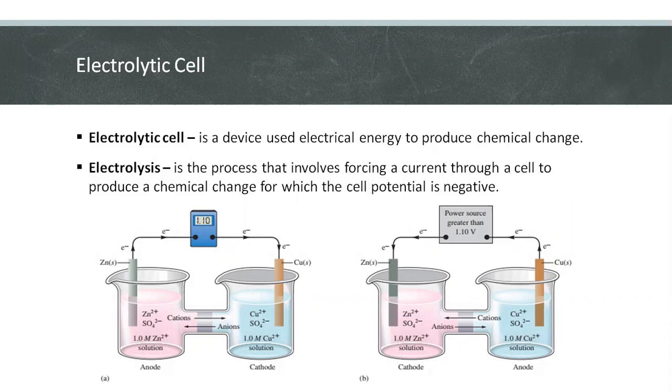Figure B shows an external power source forcing electrons through the cell in the opposite direction. This requires an external potential greater than 1.1 volts, which must be applied in opposition to the natural cell potential. This device is an electrolytic cell.